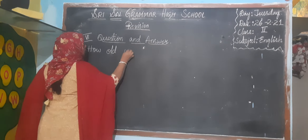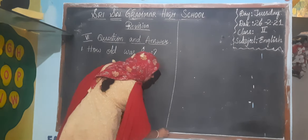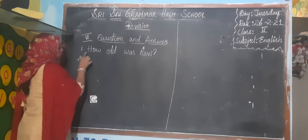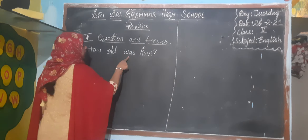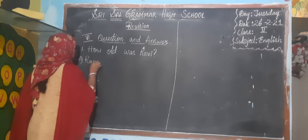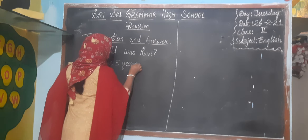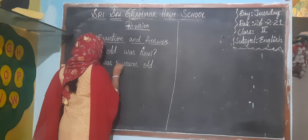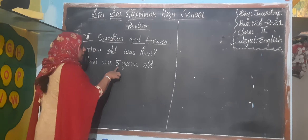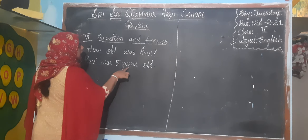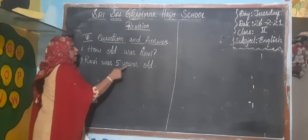First question: How old was Ravi? (H-O-W, O-L-D, W-A-S, R-A-V-I). Write down the answer: Ravi was five years old. (R-A-V-I, W-A-S, F-I-V-E, Y-E-A-R-S, O-L-D). How old was Ravi? Ravi was five years old.